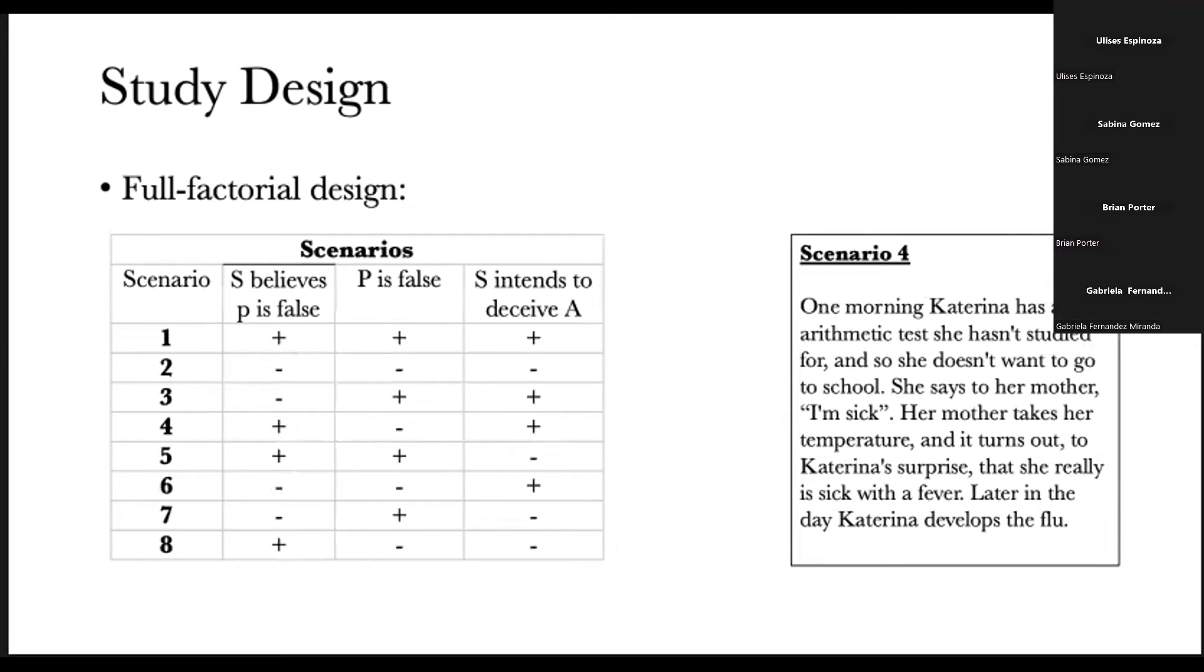That gives us a full factorial design with binary possibilities for each of these variables.